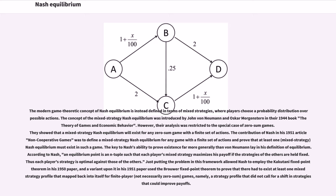The contribution of Nash in his 1951 article Non-Cooperative Games was to define a mixed strategy Nash equilibrium for any game with a finite set of actions and prove that at least one Nash equilibrium must exist in such a game. According to Nash, an equilibrium point is an n-tuple such that each player's mixed strategy maximizes his payoff if the strategies of the others are held fixed. Thus each player's strategy is optimal against those of the others. Just putting the problem in this framework allowed Nash to employ the Kakutani fixed point theorem in his 1950 paper, and a variant upon it in his 1951 paper used the Brouwer fixed point theorem to prove that there had to exist at least one mixed strategy profile that mapped back into itself for finite player games, namely a strategy profile that did not call for a shift in strategies that could improve payoffs.